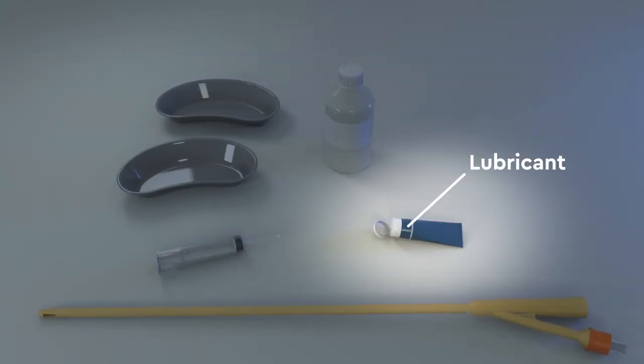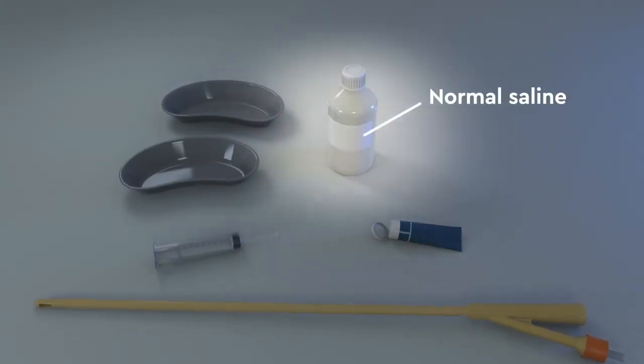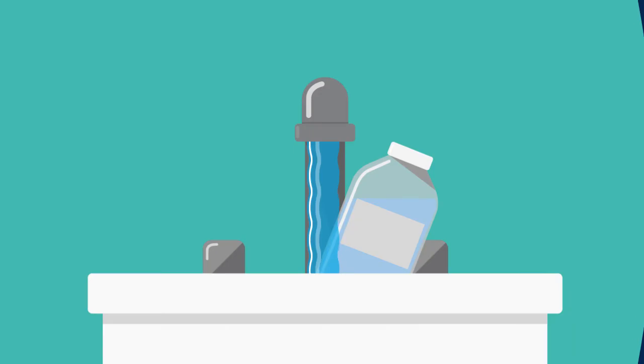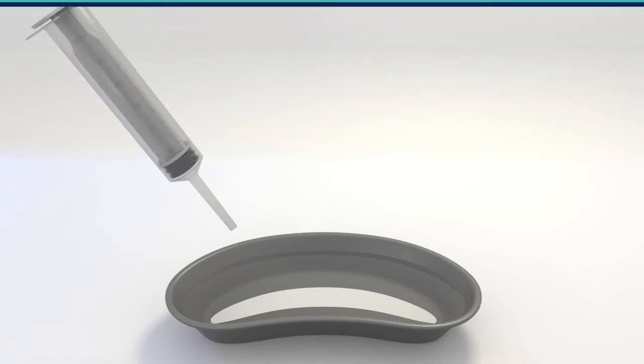You'll also need water-soluble lubricant and normal saline. Start by warming the normal saline. We recommend sitting the bottle in a sink of warm water, then testing the temperature of the saline on your wrist to make sure it isn't too hot.